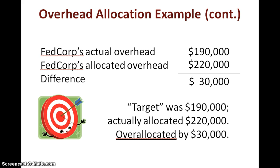The target was $190,000, so we should have allocated only $190,000, but we allocated more because we were using estimates — we allocated $220,000. Since we allocated more than the actual amount, we say that manufacturing overhead was over-allocated to jobs by $30,000. If it were the opposite — where our allocated amount was less than actual — we would say we under-allocated our manufacturing overhead.